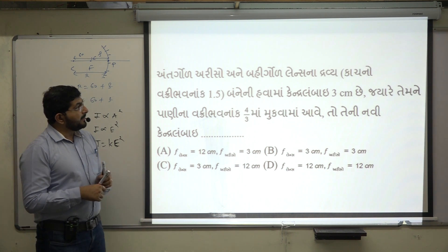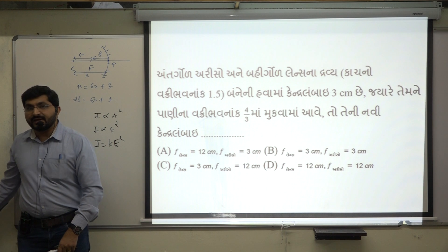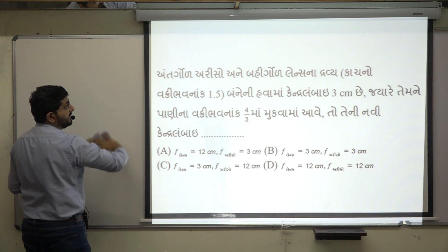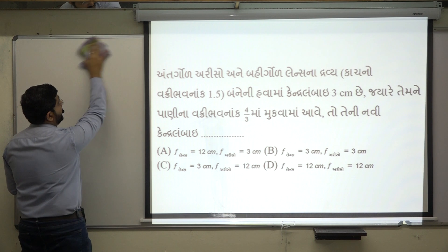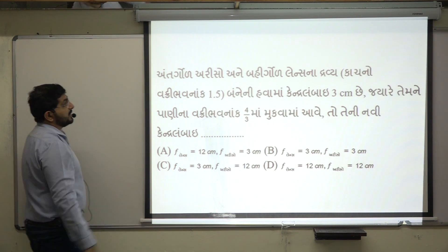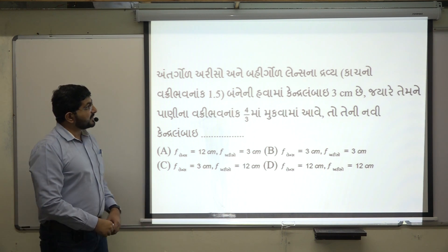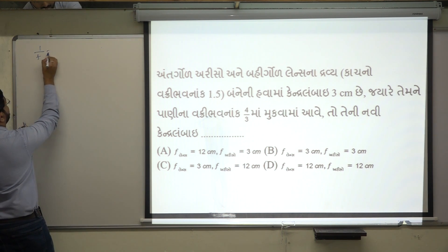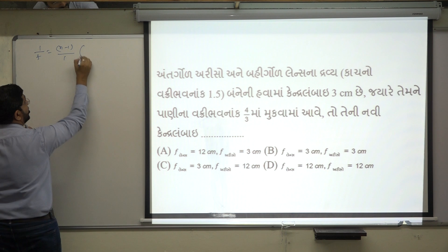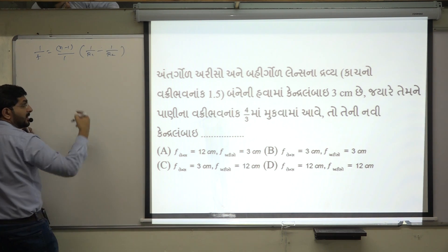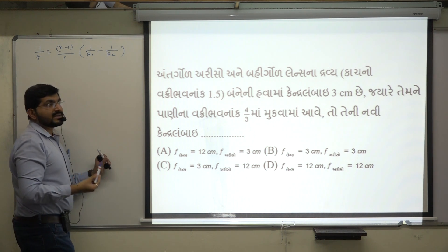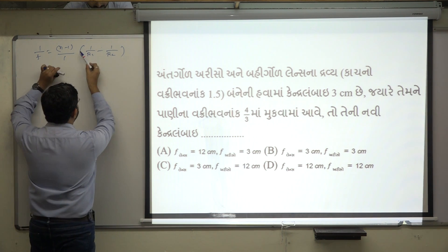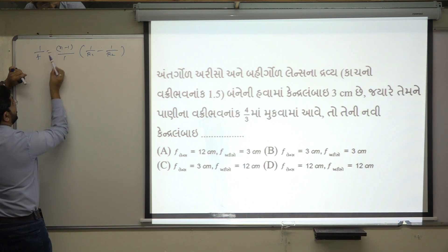If the refractive index of the outer lens medium is 1.5 cm — the angle of incidence is 300 cm. If the refractive index is 4/3, you need to find the focal length of the lens. Basically the lensmaker's formula: 1/F = (n−1)[1/R₁ − 1/R₂]. For a convex lens, we have two different radii R1 and R2, and we work with these values.